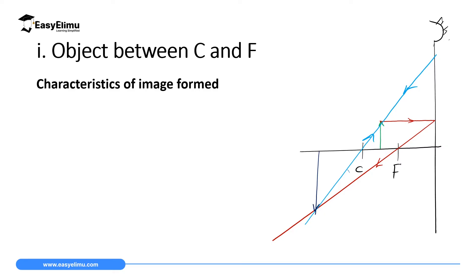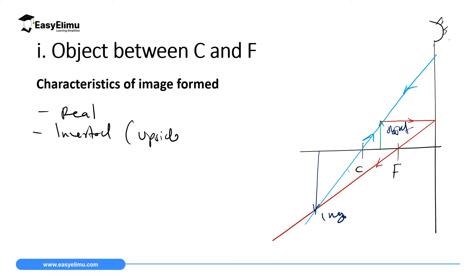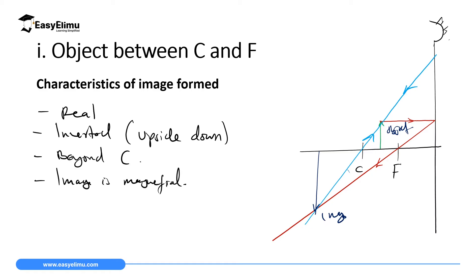This is the image formed, and this is the object. The characteristics of this image are: first, the image is real, because it is formed by real rays. Second, the image is inverted — it is upside down. Third, the image is beyond C. And finally, the image is magnified, meaning it is larger than the object.